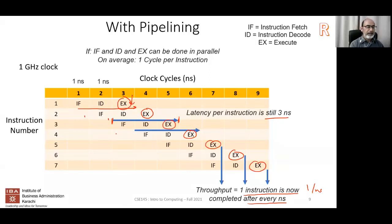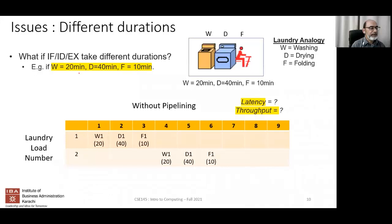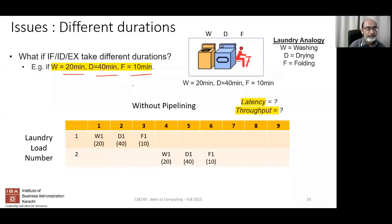Now let's look at the issues with pipelining. The first issue is what happens when the durations of different activities are different. For example, if instruction fetch, decode, and execute didn't all take the same amount of time. In the laundry analogy: washing takes 20 minutes, drying takes 40 minutes, and folding takes 10 minutes. Without pipelining, what would the latency and throughput be?